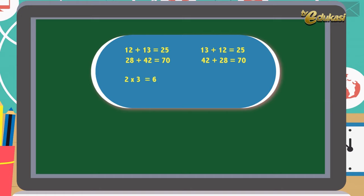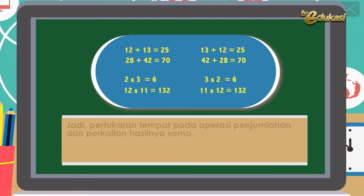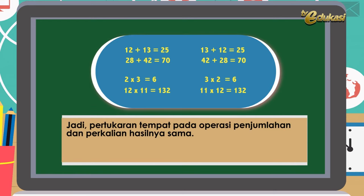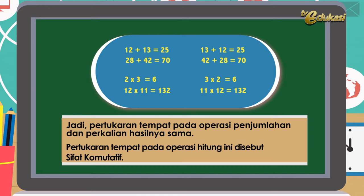Perhatikan perkalian di bawah ini. Dua kali tiga sama dengan enam. Tiga kali dua sama dengan enam juga. Dua belas kali sebelas sama dengan seratus tiga puluh dua. Sebelas kali dua belas sama dengan seratus tiga puluh dua. Apa kesimpulannya? Jadi, pertukaran tempat pada operasi penjumlahan dan perkalian hasilnya sama. Pertukaran tempat pada operasi hitung ini disebut sifat komutatif. Jelas ya, anak-anak?